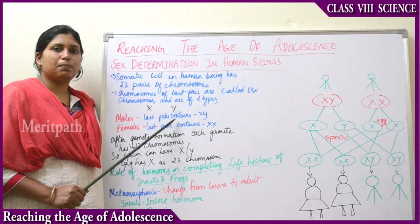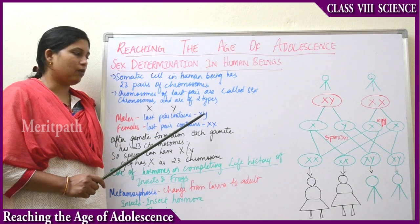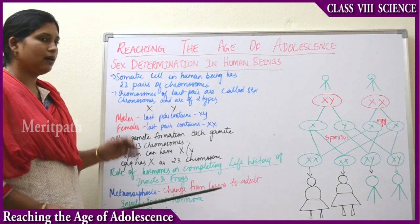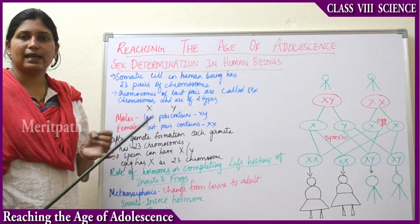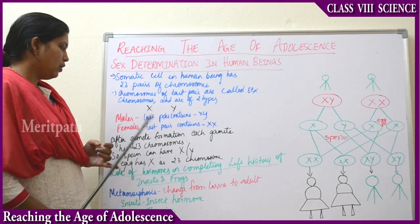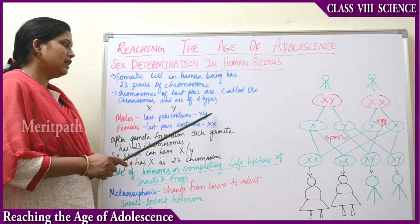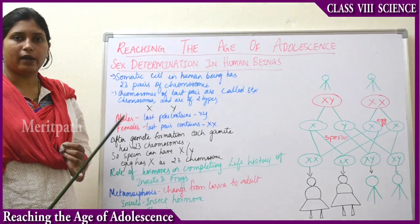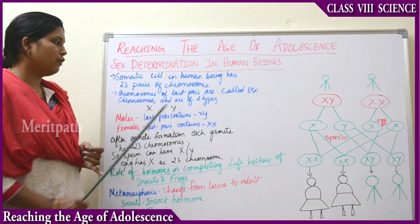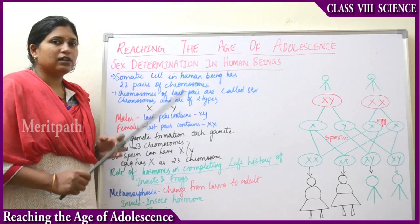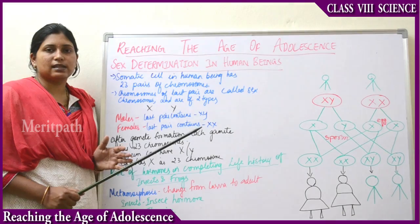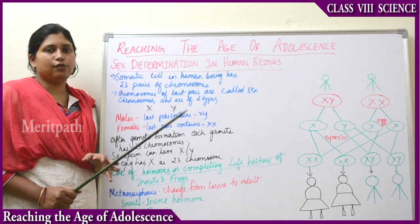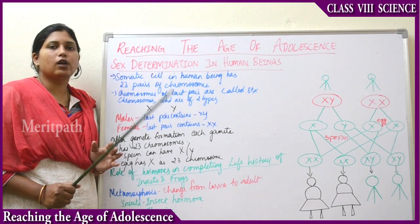So it is only the Y chromosome which is responsible for the birth of a boy. If the baby has X and X chromosomes, it is always a girl. If the baby has X and Y chromosomes, it is always a boy. So if there is a Y chromosome in the born baby, then only will it be a boy.